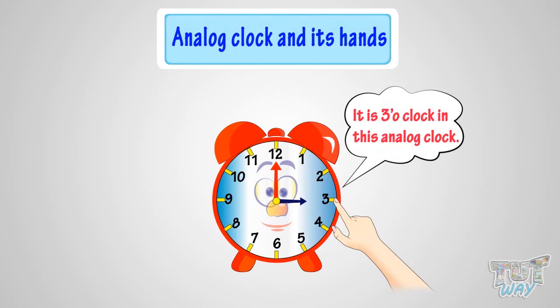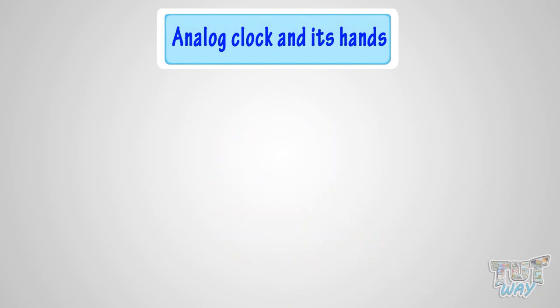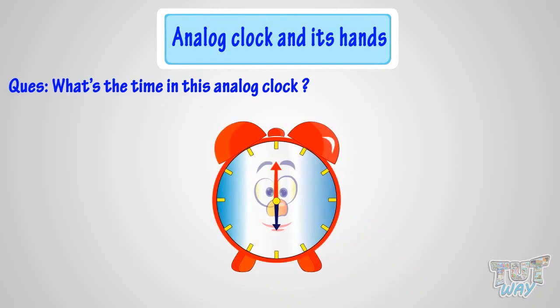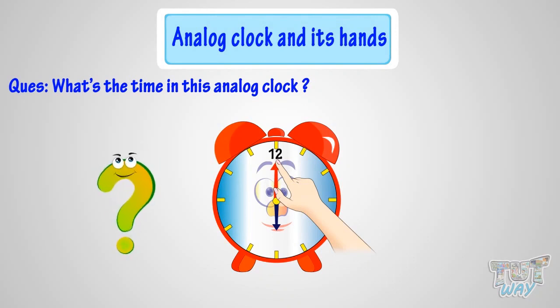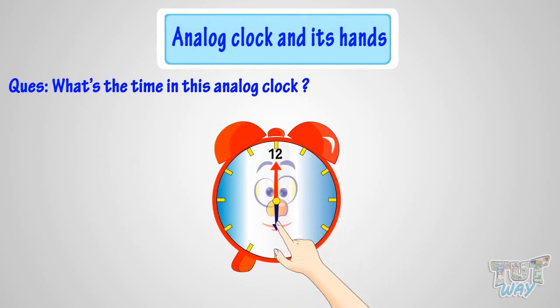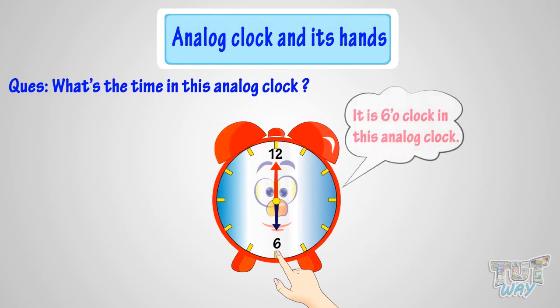Here we have another example. Can you tell me what's the time in this analog clock, where no numbers are written? This is the place of number 12, so the minute hand is pointing at number 12, so it's time to the hour. But to which hour? The hour hand tells the hour. This place is of number 6, where the hour hand is pointing. So it's 6 o'clock.